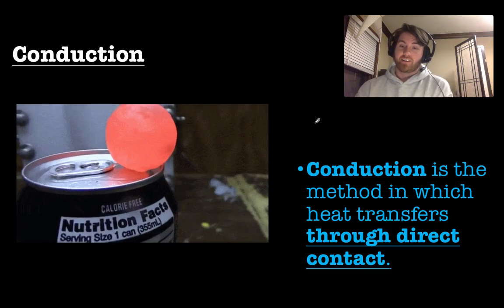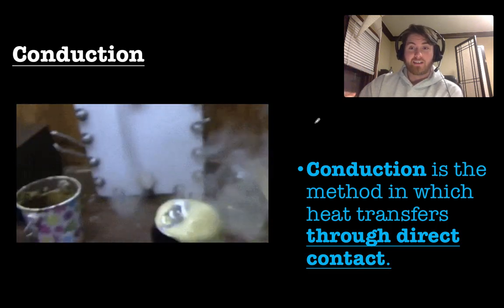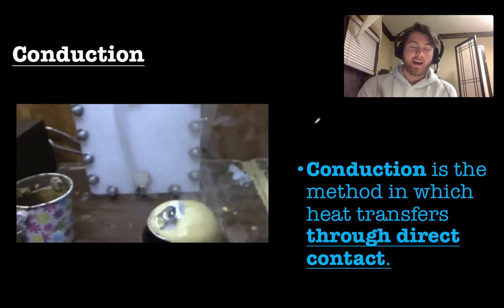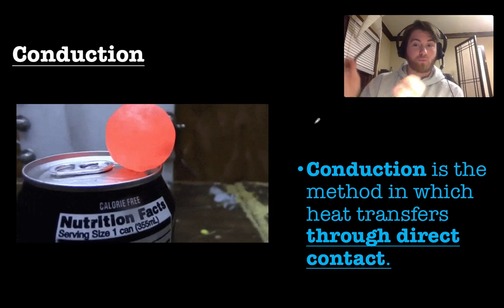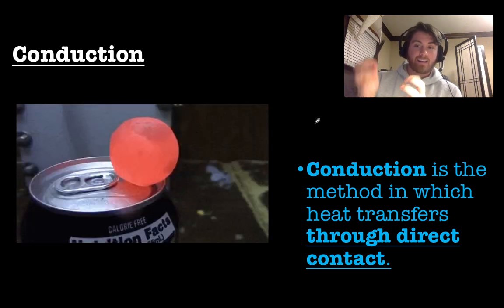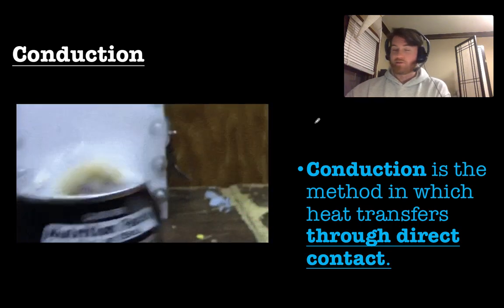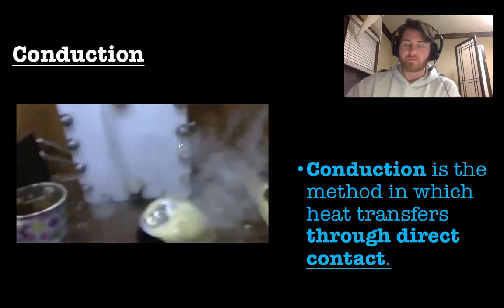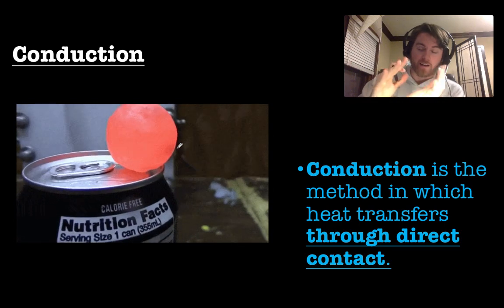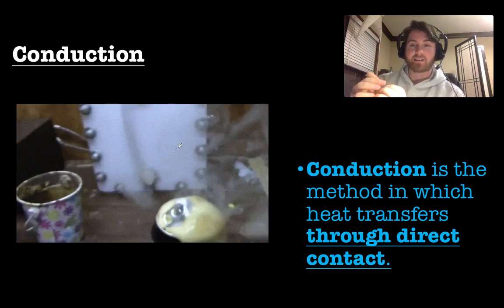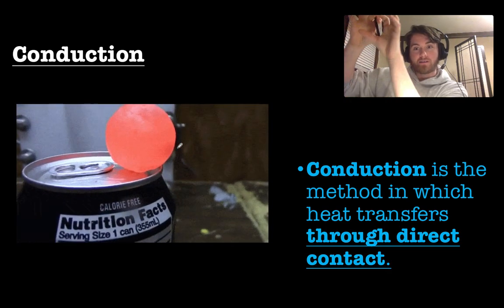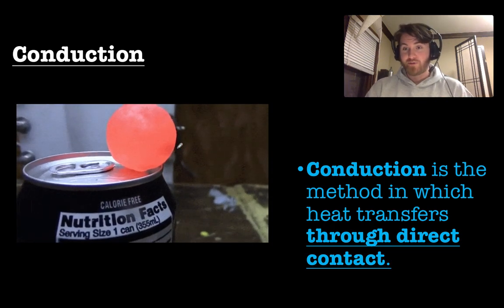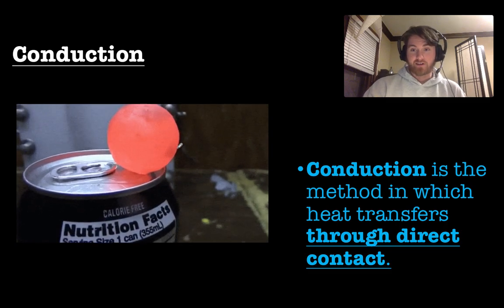The first method is conduction. Conduction is the method through which heat is transferred through direct contact — you have to have direct contact between the molecules. For example, a heated metal ball touching a Pepsi can: because they are in direct contact, energy from the metal ball transfers into the can, causing the reaction you see. This is conduction.